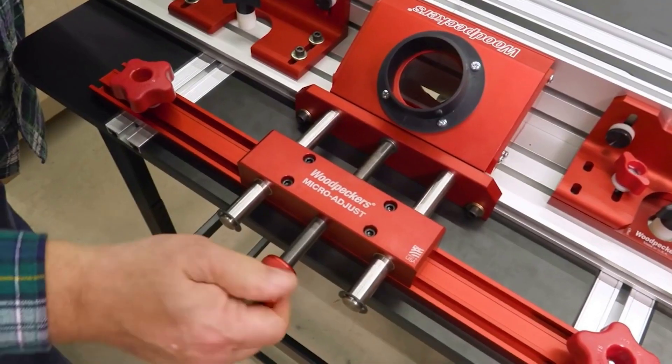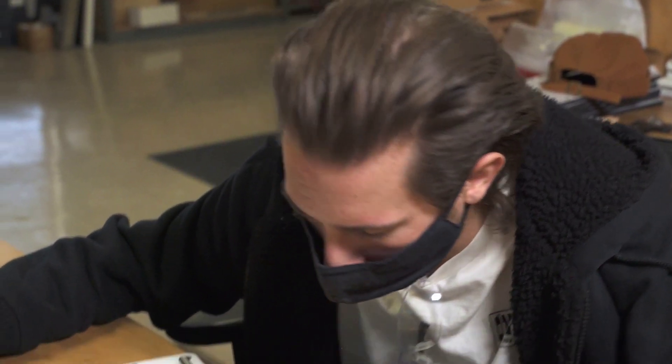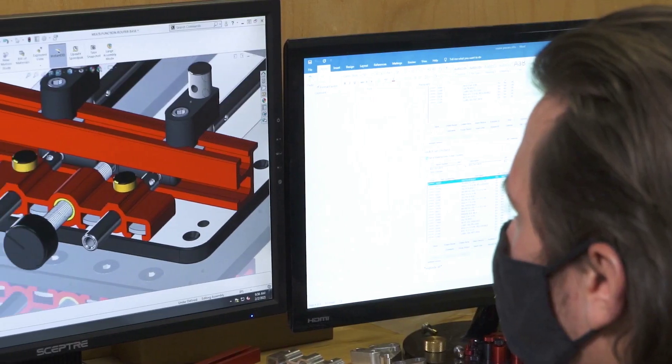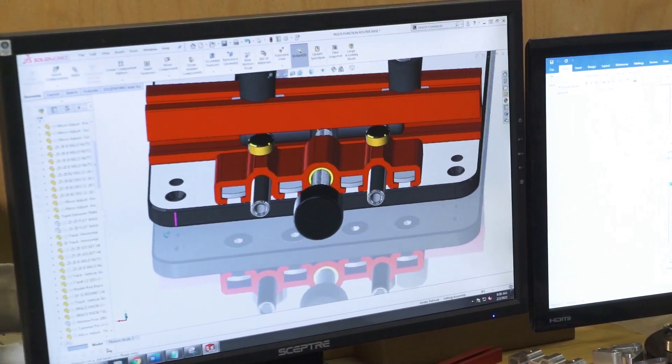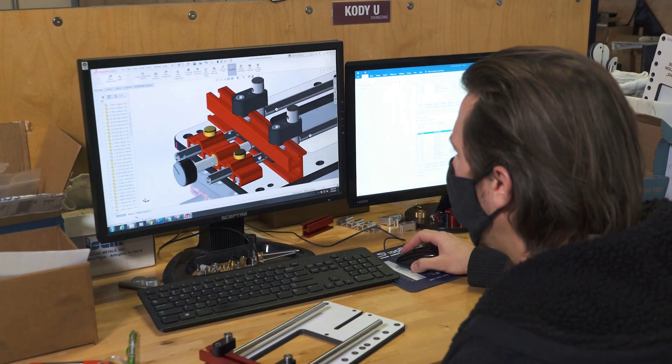And here's product engineer Cody Urig on the Micro-Adjuster. I was working with the Router Table Micro-Adjuster one day in the shop and it dawned on me that the pair of guide rods with the adjustment screw centered between them could be adapted to the router base I was designing. Keeping things centered balances the tool and smooths out operation, both when you're adjusting the tool and when you're using it.